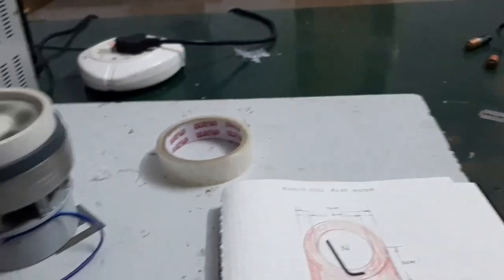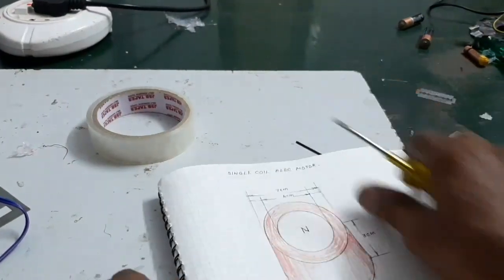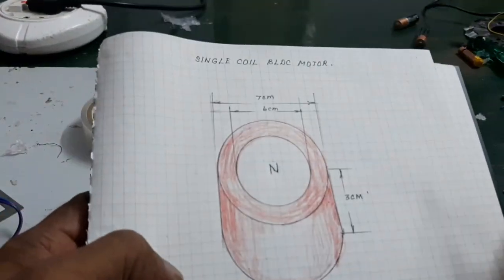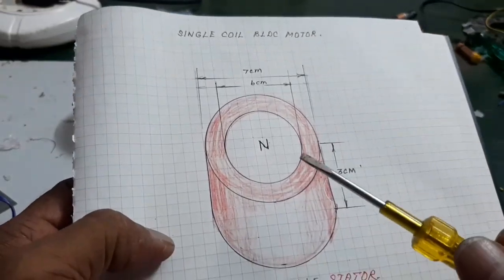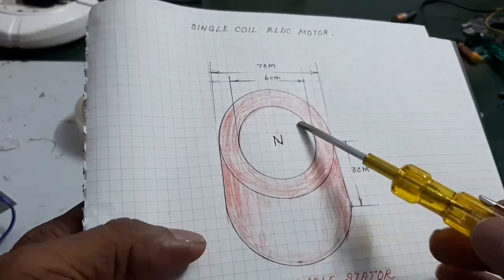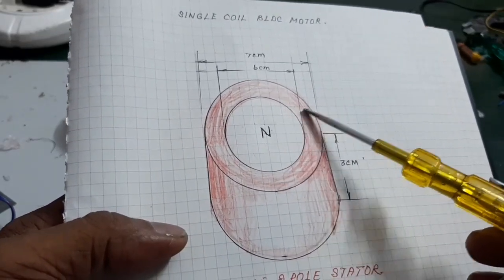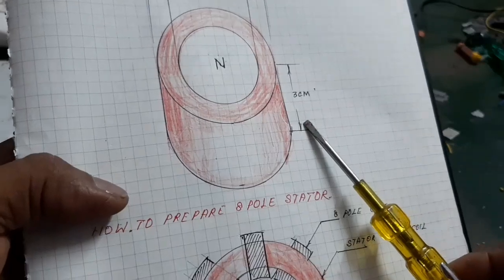Here, look at the drawing. This is the coil used for the BLDC motor. The coil outer diameter is 7 cm and inner diameter is 6 cm, height 3 cm.